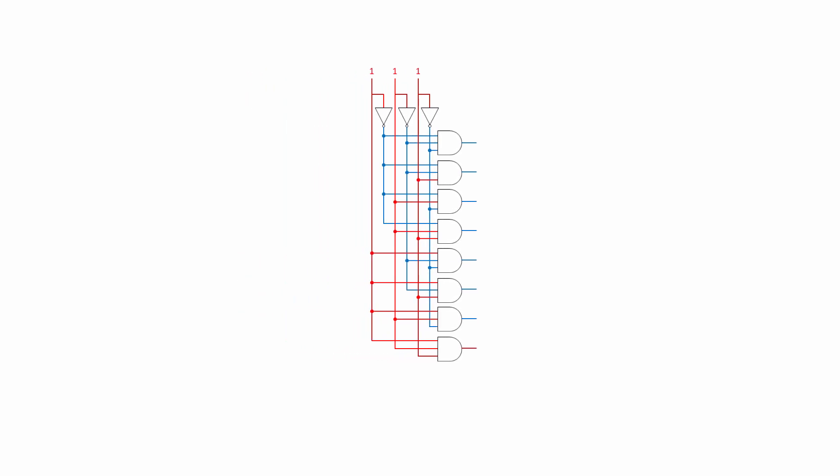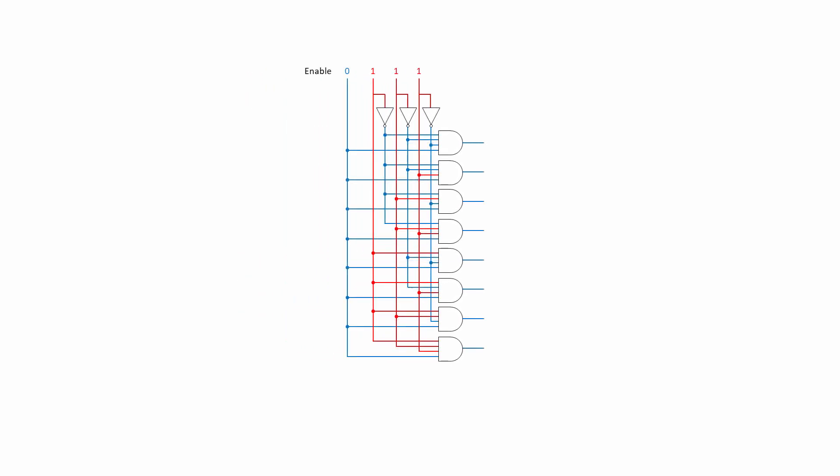A 3-to-8 decoder can be constructed with an extra input whose job is to enable the device. Each AND gate now has four inputs instead of three. Only when the enable input is high does the decoder activate anything at all according to the selection inputs.